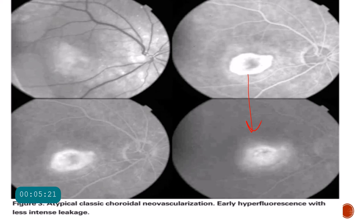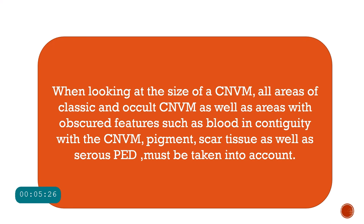When measuring the size of a CNVM — whether classic or occult — the measurement must include the CNVM proper plus any blood present in continuity with the CNVM, any pigment, any scar tissue, and any serous PED. So if there is hemorrhage or pigment adjacent to the CNVM, all of these components must be measured together when determining the total CNVM size. That's all for today — thank you and have a nice day.